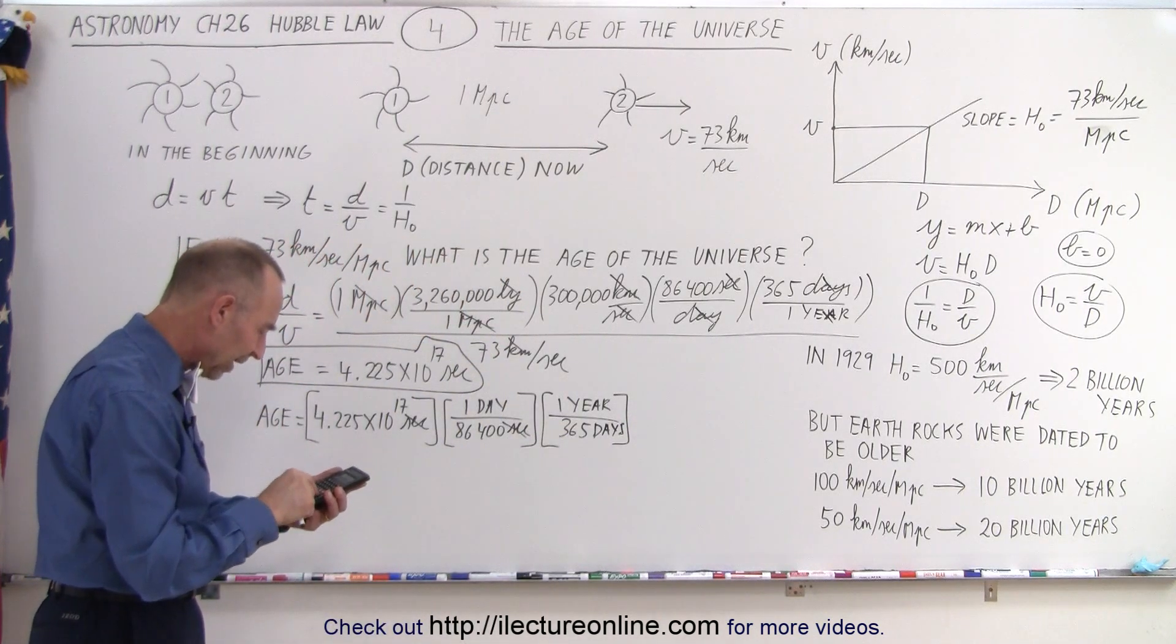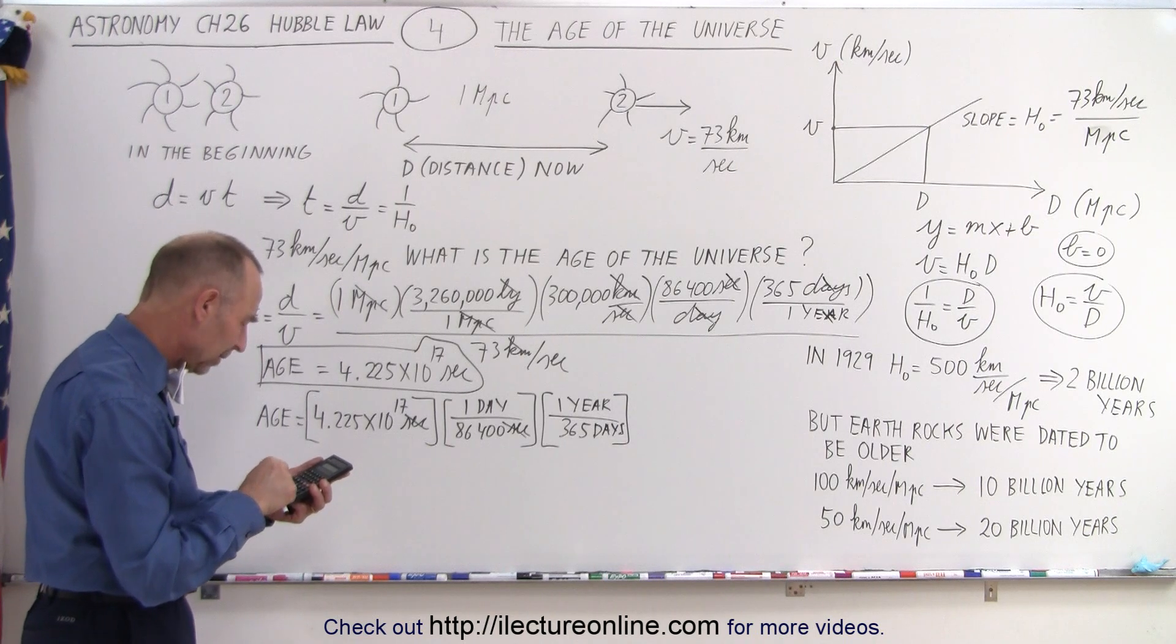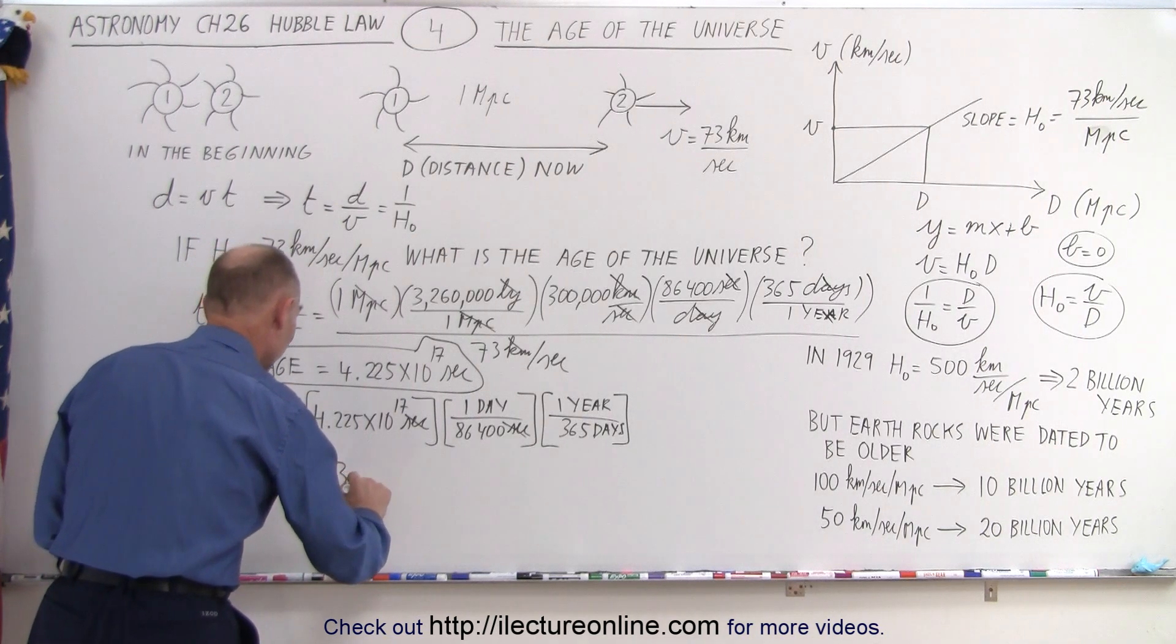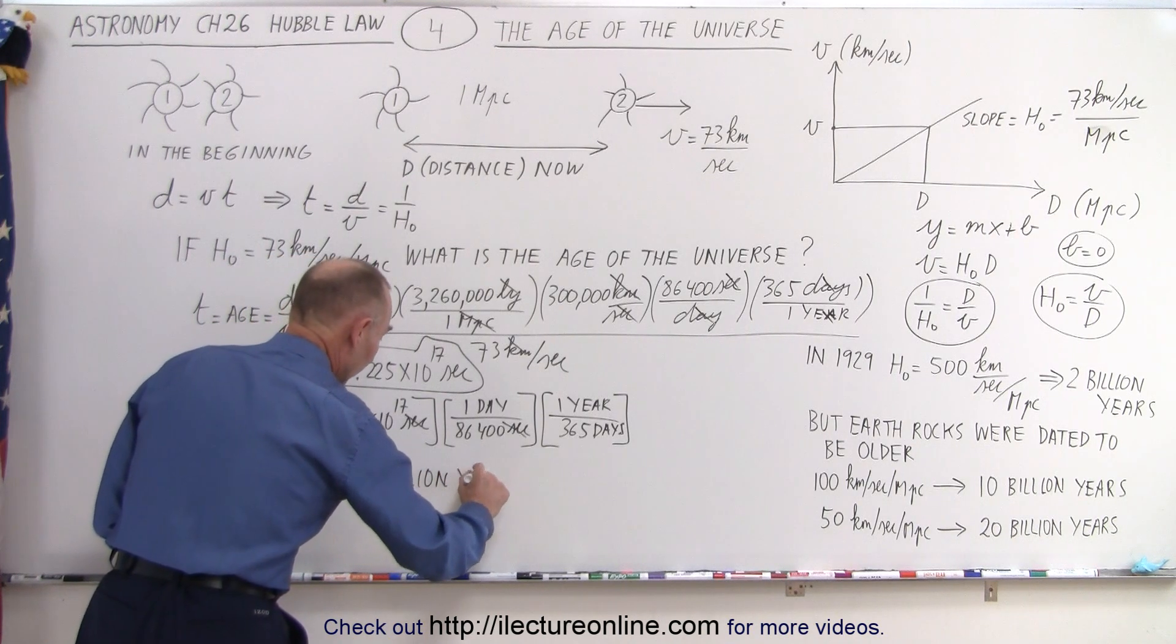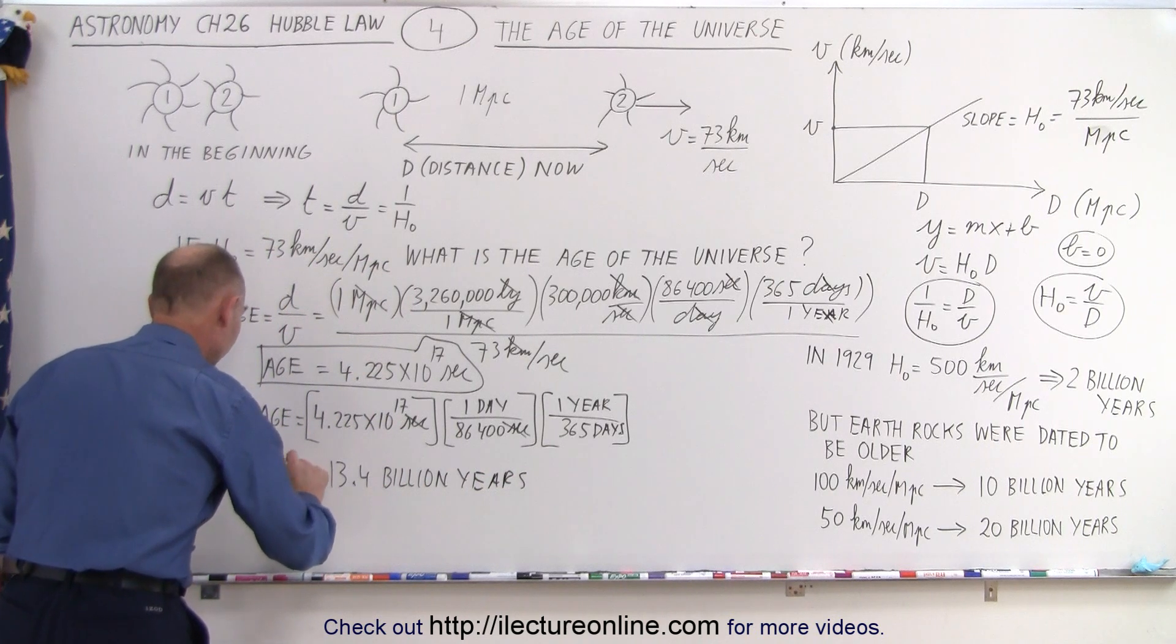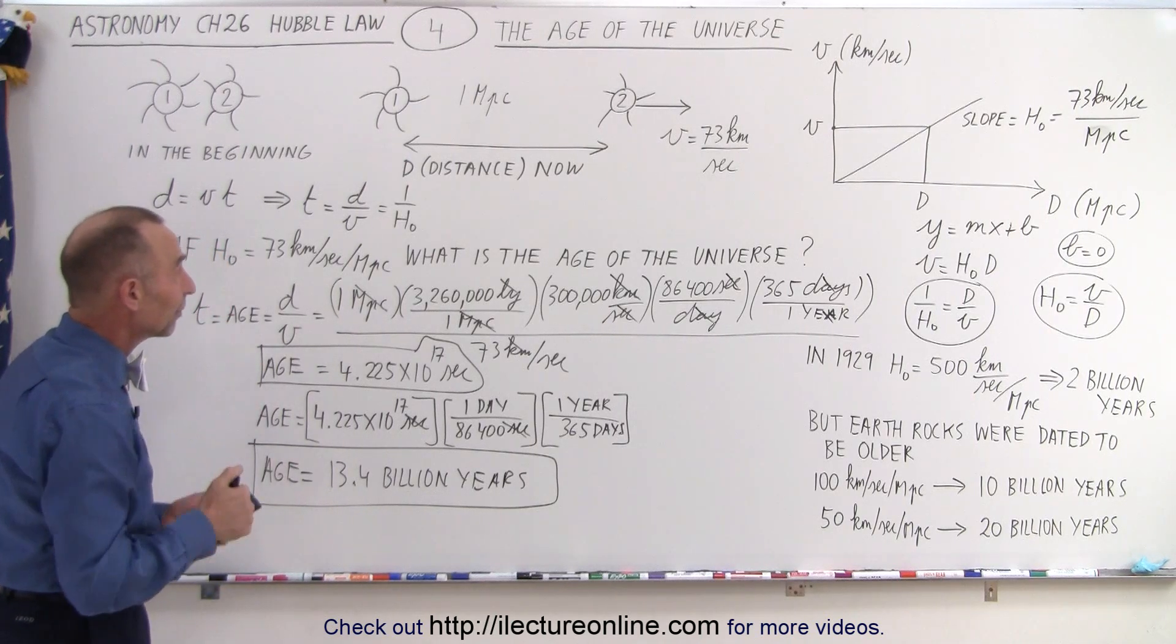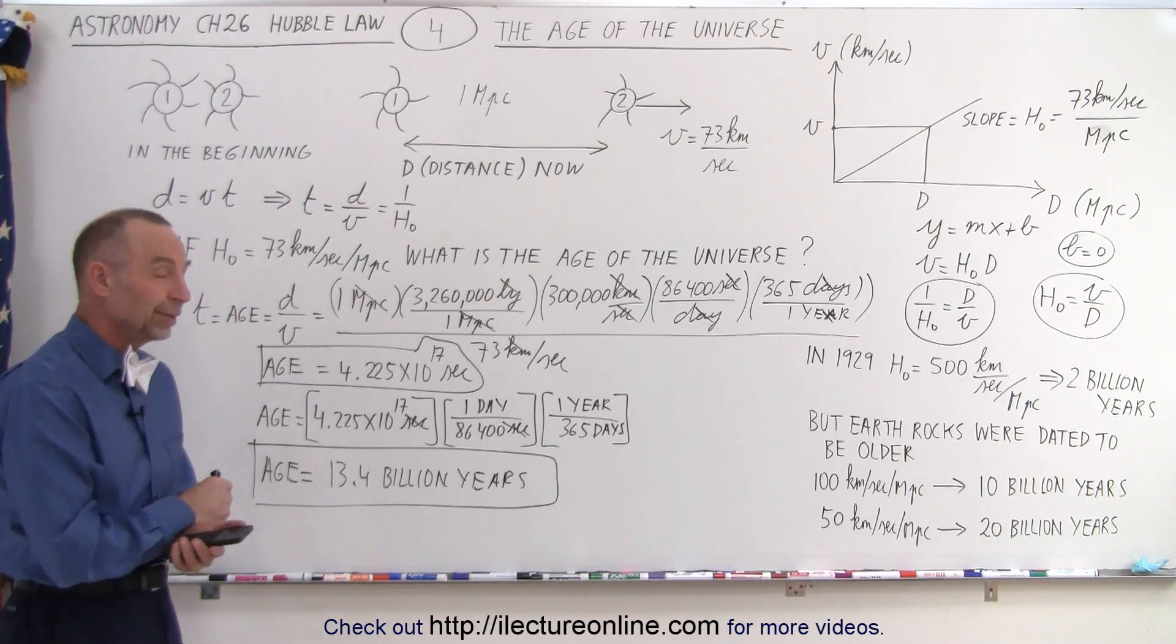So I'm going to take that number and divide by 86,400 and divide by 365, and now I end up with 13.4. So this would be equal to 13.4 billion years. That means if the Hubble constant is equal to 73 kilometers per second, we can say that the age of the universe must be around 13.4 billion years.